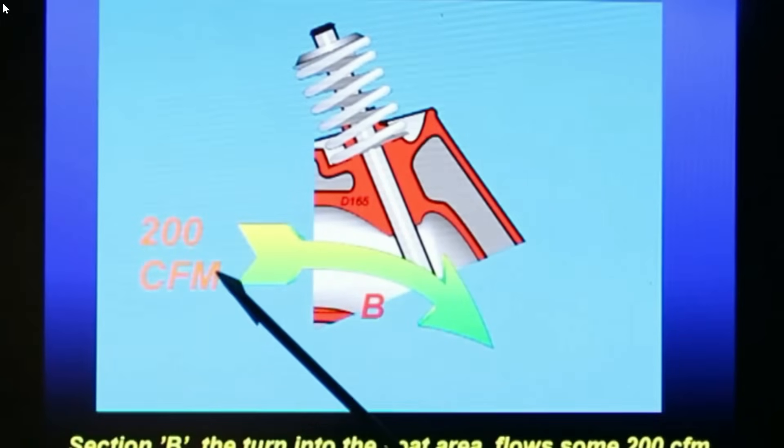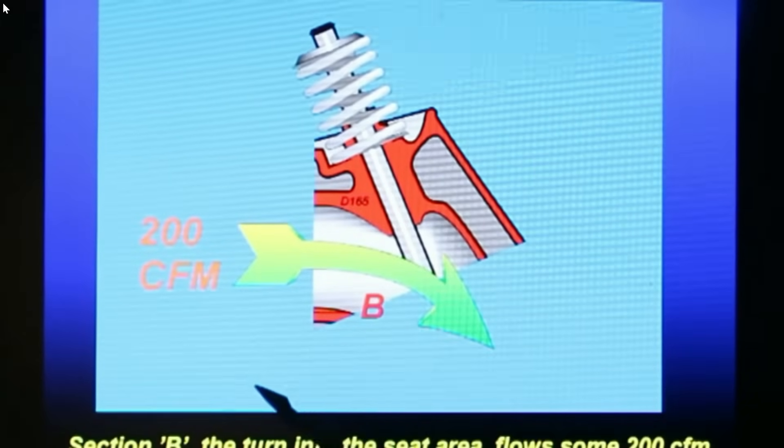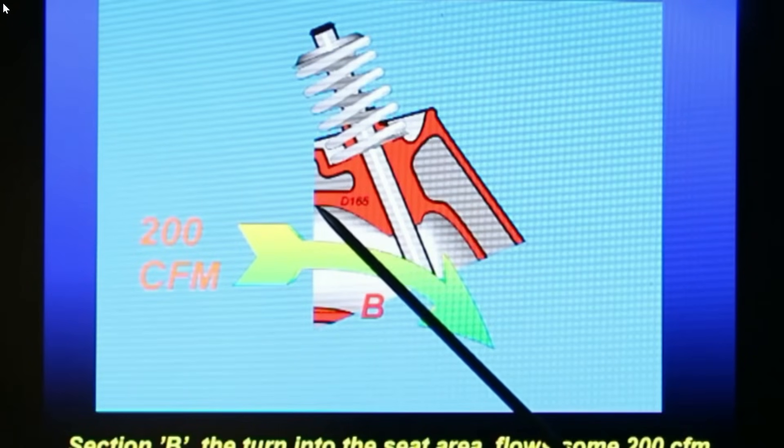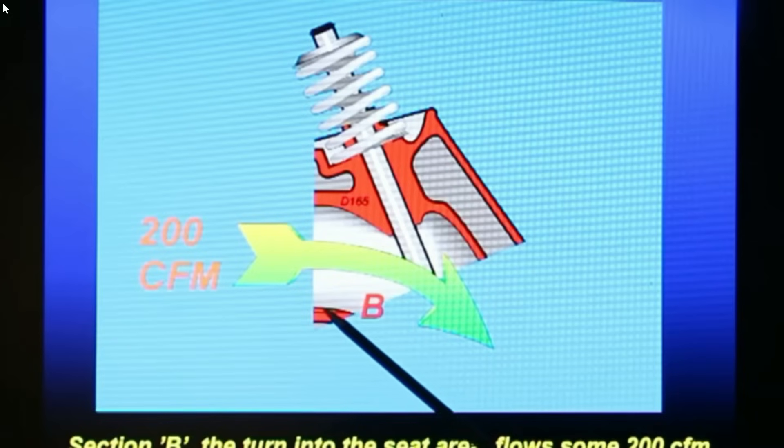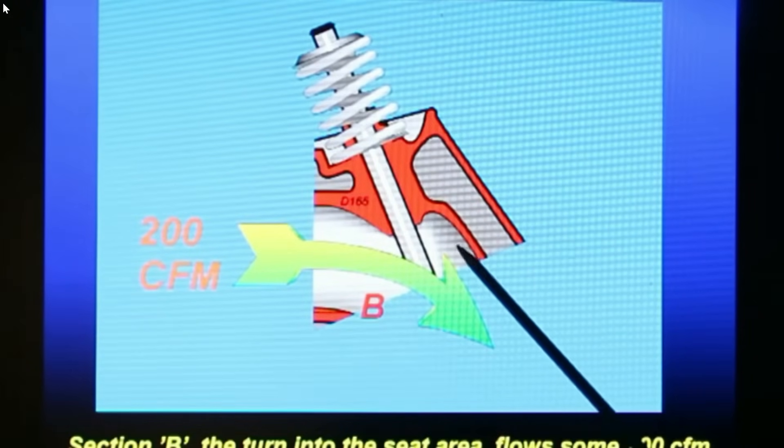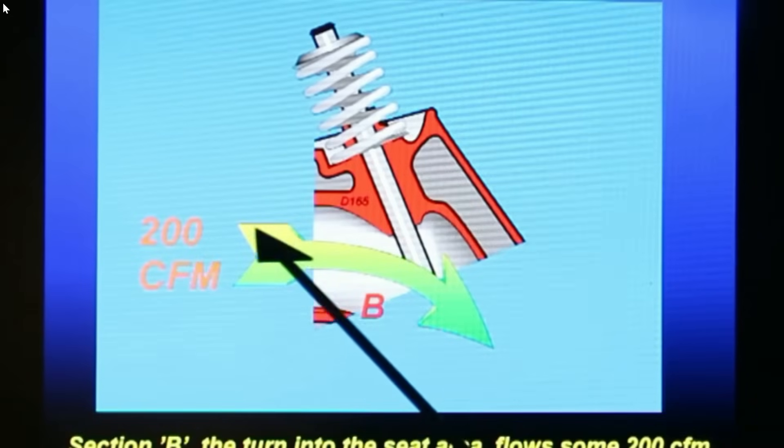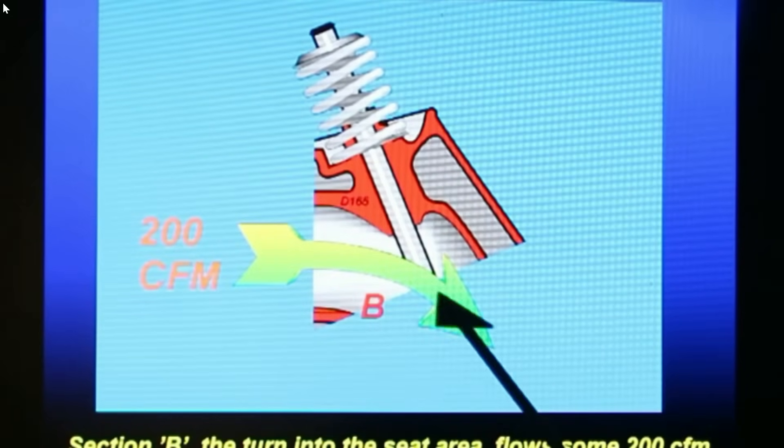Let's move along. Section 2, the turn into the seat here. Right now, all of our sections had a lead in on the entry here to get rid of the edge effect. Right. On the outlet, they were just left to go straight into the bench. So this was 200 CFM or 212 CFM at 28 inches. That's 200 at 25, 212.